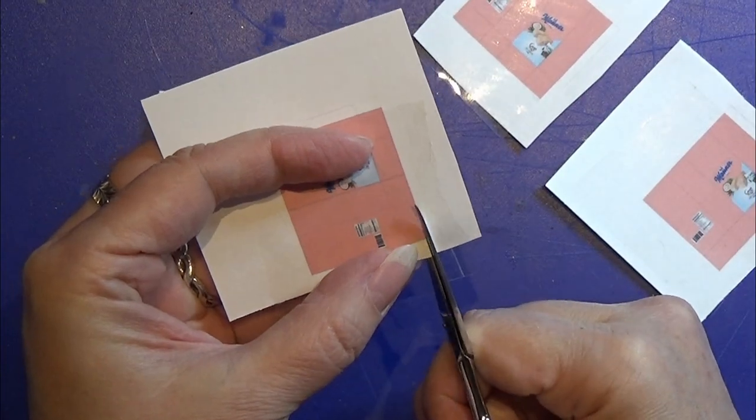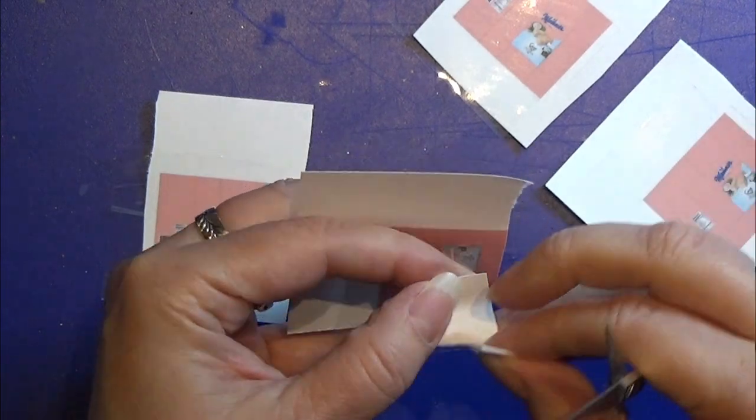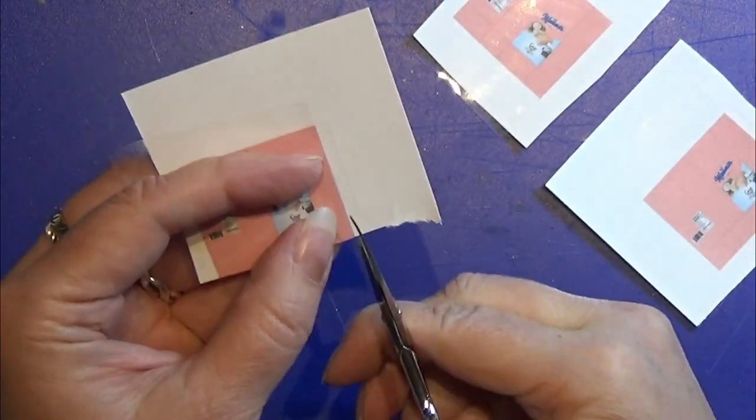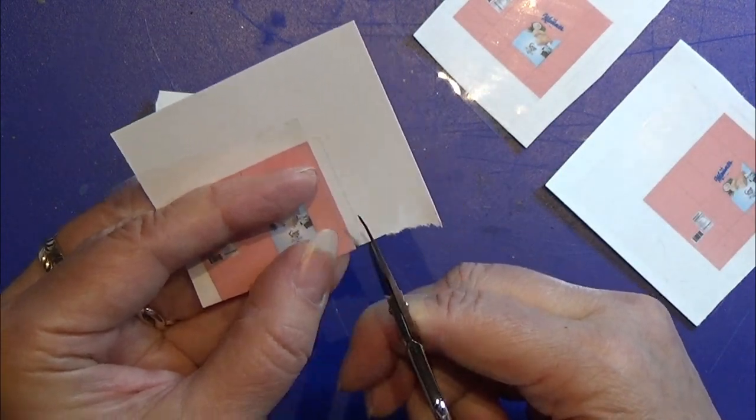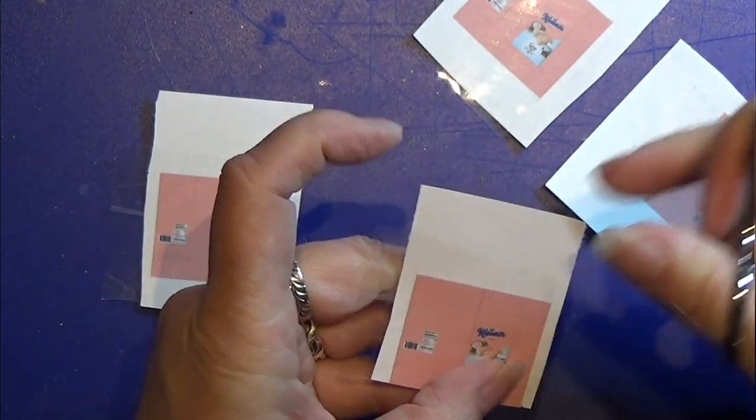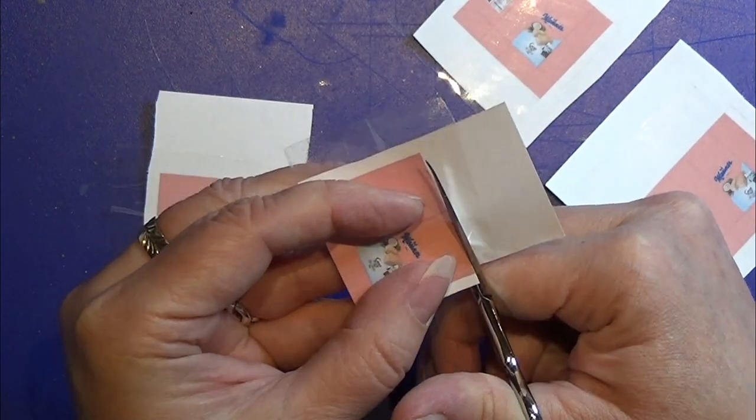I took some packing tape and placed that over the print file, not on the little white tab but on everything else, and then I'm just going to cut it out like you see me do right here.